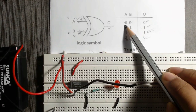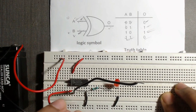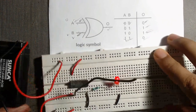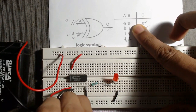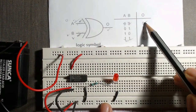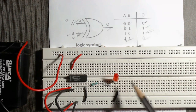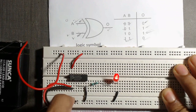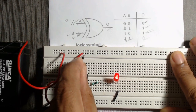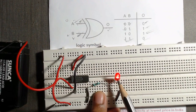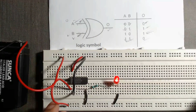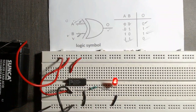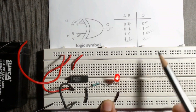Now from the truth table, when A is 0, we connect it to the ground row, and B is also 0, we connect it to ground. We can see the output is now 0 — the LED is off. For the second set of inputs, when A is 0 connected to ground and B is 1, we connect B to VCC. Now we can see the output is 1 — the LED is on. For the third set of inputs, when A is 1 connected to VCC and B is 0 connected to ground, the output is also 1.